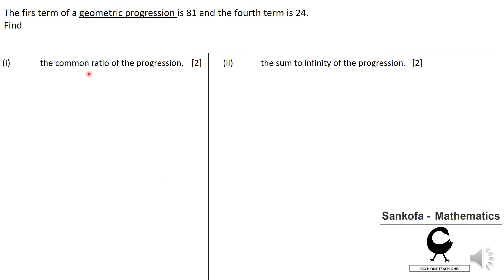I hope you gave it a go. Let me write down my key information. I have a geometric progression. The first term is 81, the fourth term is 24. The formula T sub N, the nth term for GP is AR raised to the N minus 1 power.